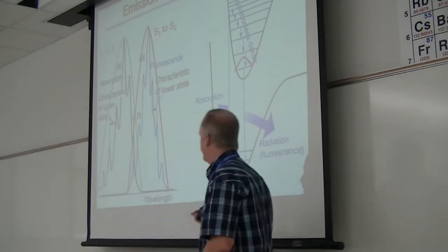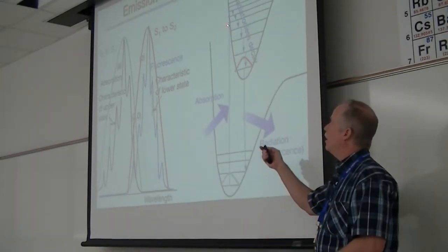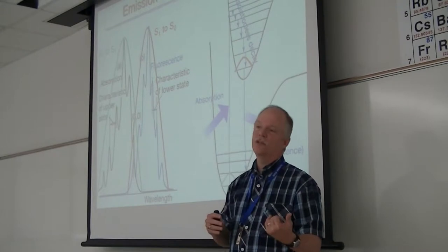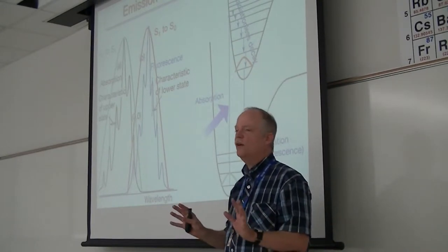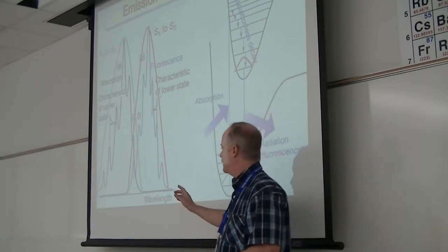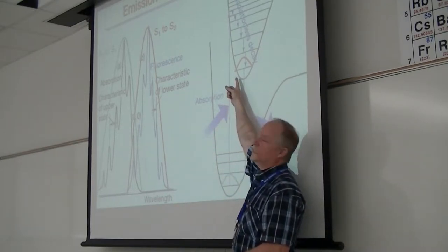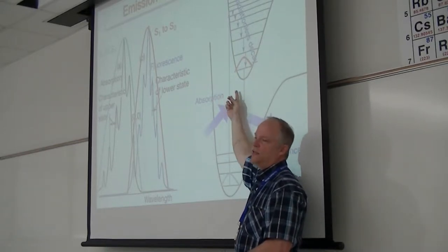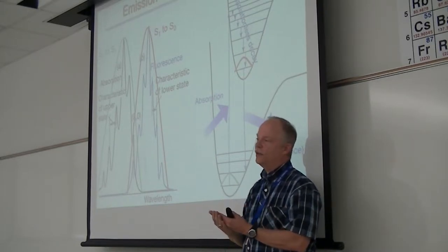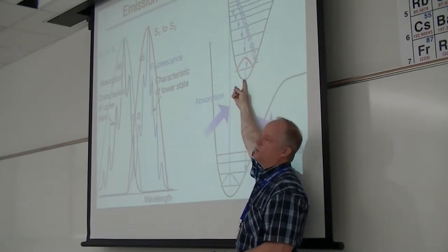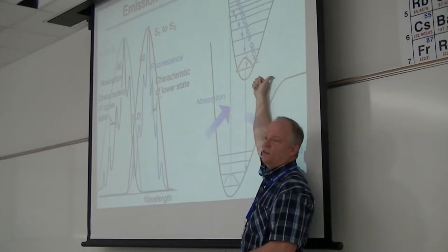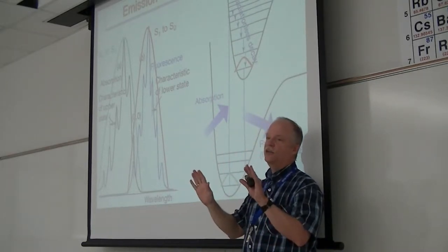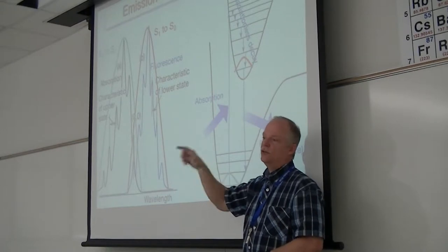The reason it's always red-shifted is because the absorption arrows are longer than the emission arrows. Since the emission arrows are shorter, they correspond to longer wavelengths. If they overlap at all — which they don't have to — the only way they would overlap is if you have a zero-to-zero transition that overlaps with a zero-to-zero emission. If the potential energy surface is shifted far enough to the right that you don't have a zero-zero absorption, then you wouldn't have an overlap — a complete separation between your absorbance and emission spectra.